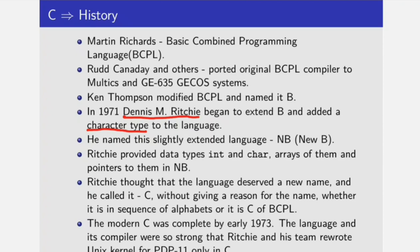He named the slightly extended language New B. Ritchie provided two data types: int for integer and char for character, arrays of them and pointers to them in NB. Then he gave a new name to the language, and the name given was C.